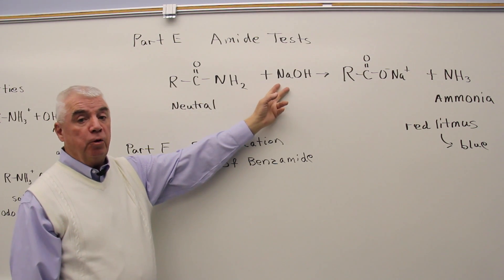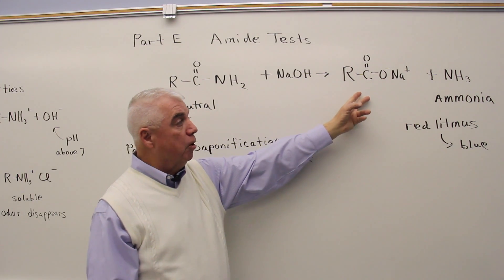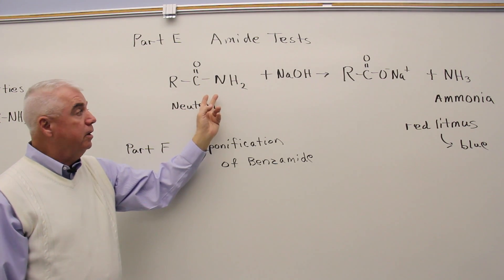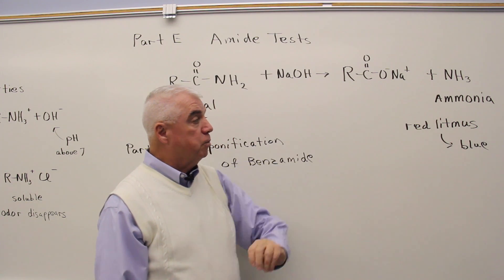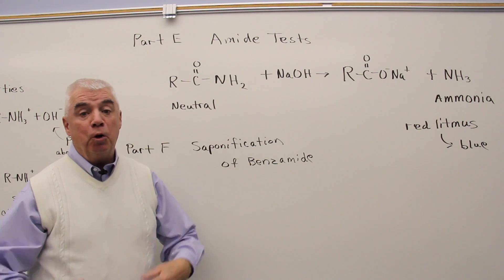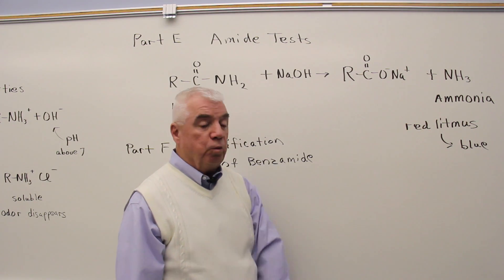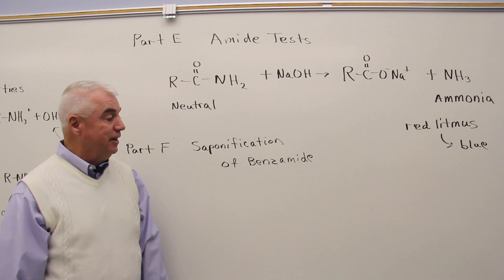Amides do react with sodium hydroxide though. We get the sodium salt of a carboxylic acid. If it's a simple amide like this one, where the nitrogen is not substituted, then you'll get ammonia as one of the products. And ammonia is a base. As you know, it'll cause red litmus to turn blue. So you'll be able to identify it in that way.